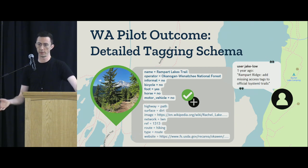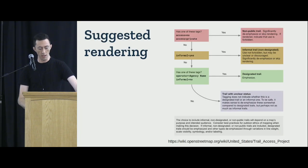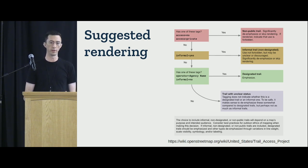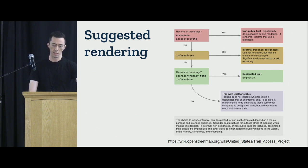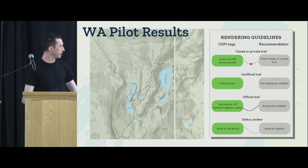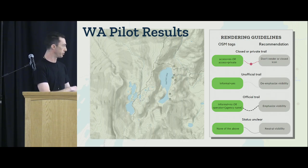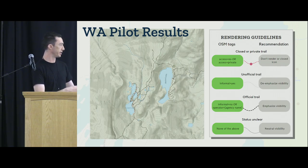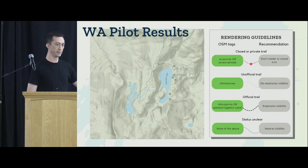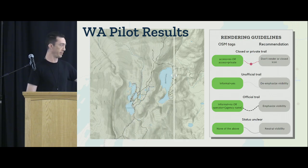We came up with suggested rendering guidelines: if a trail is an official managed trail, most renderers will want to emphasize it; if it's unofficial, they should de-emphasize or hide it. This is one of my favorite slides — a before-and-after of the edits we made to OpenStreetMap and the changes AllTrails made to their cartography to reflect those edits. This is a really braided informal trail network in a sensitive alpine lake ecosystem, and after these edits it's much more obvious to users where they ought to go — the main official maintained designated trails where their impact will be lowest.